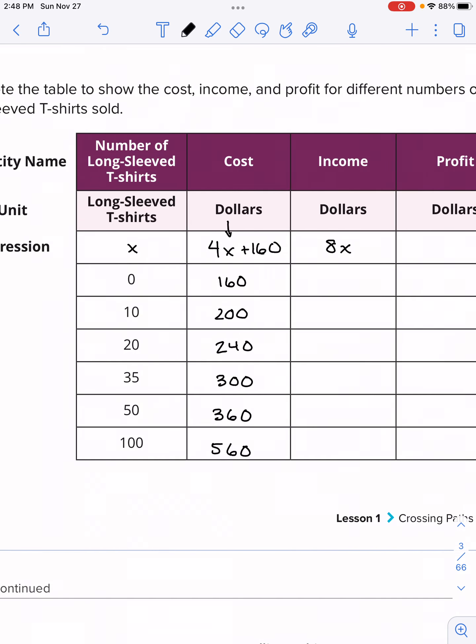I'll give you the remaining values here. So this is 300, 360, and 560. Now moving on to income, we're still plugging in all these values, but we're plugging them into x here. So it means we're just going to multiply by 8. So 0 times 8 is 0. If we sell no shirts, we raise no money. If we sell 10 shirts, we'll get $80. 20 times 10 is 160. And I'll give you the rest: 280, 400. And the last one, if we sell 100 shirts, 100 times 8 is 800.